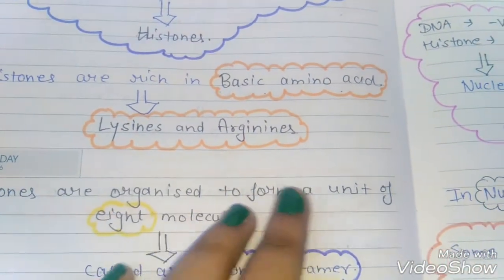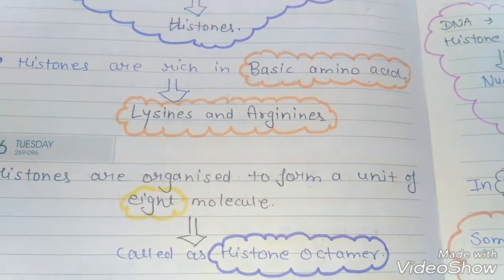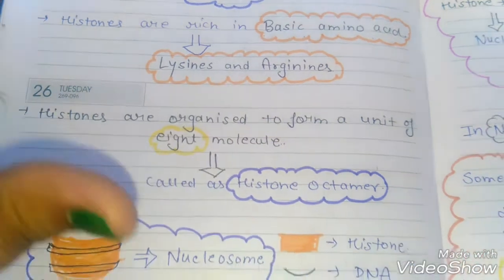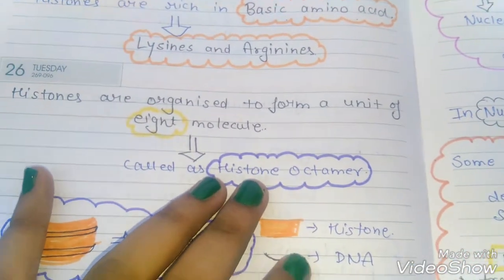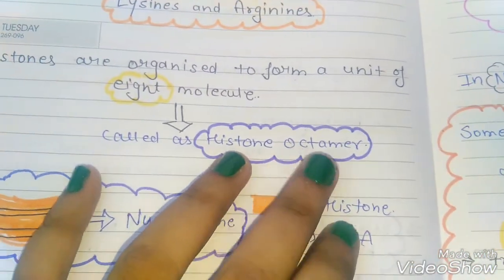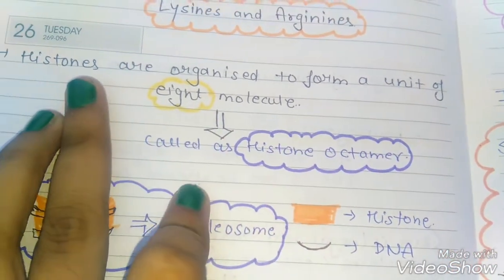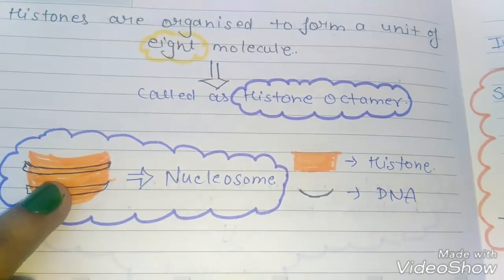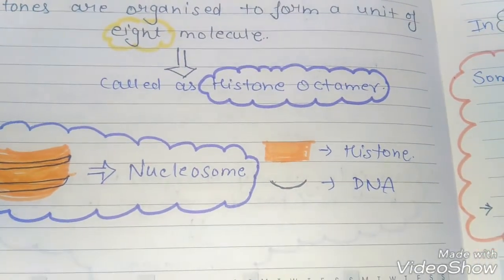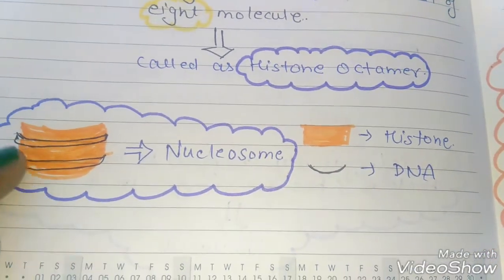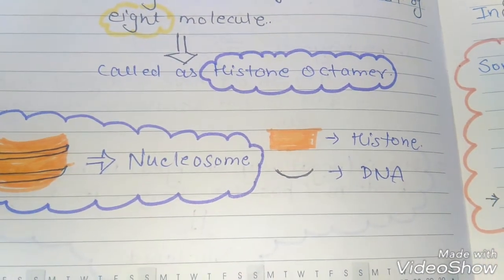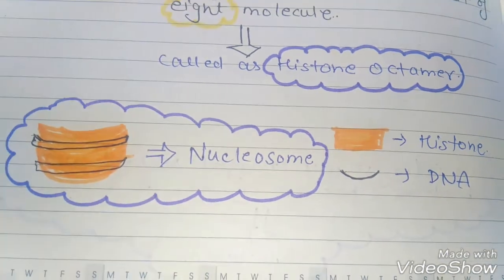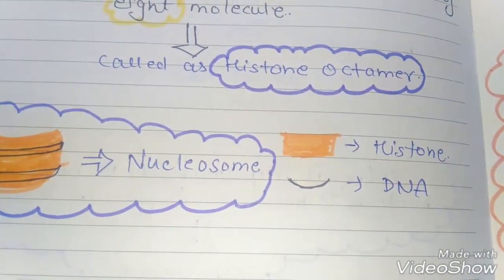Histones are organized to form a unit of 8 molecules — this is called a histone octamer, because 'octo' means 8. This structure is shown in orange, and the DNA wrapping around it is shown in black. When histones combine with DNA, the structure we call it is a nucleosome.